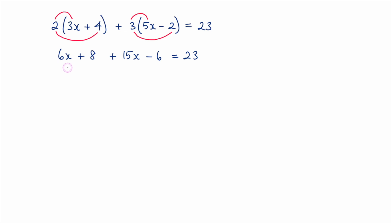We can now gather like terms. We've got this 6x and we're adding on 15x so that is 21x. We've then got the 8 here and we're subtracting 6. Well 8 subtract 6 is 2 so 21x plus 2. That is equal to 23.